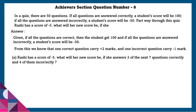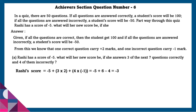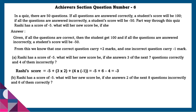Rashi had a score of minus 5. She answers 3 of the next 7 questions correctly and 4 incorrectly. Rashi's score will be minus 5 plus 3 times 2 (for 3 correct answers, plus 2 marks each) plus 4 times minus 1 (for incorrect, minus 1 each), which equals minus 3. So her new score will be minus 3.